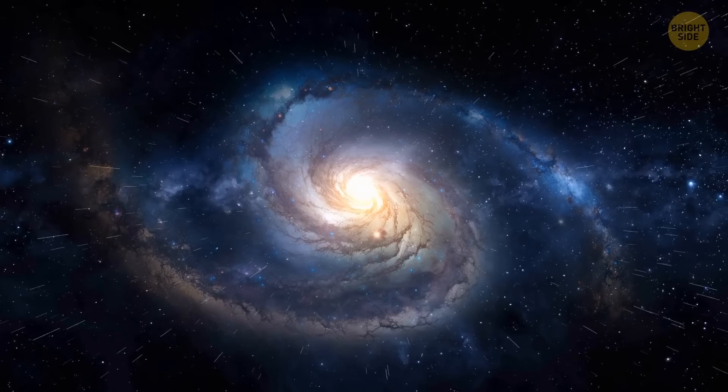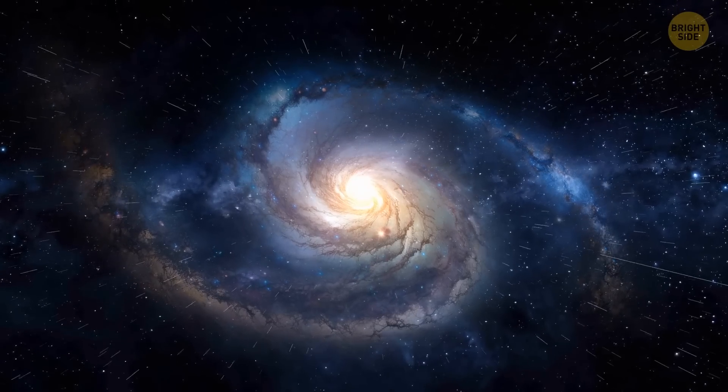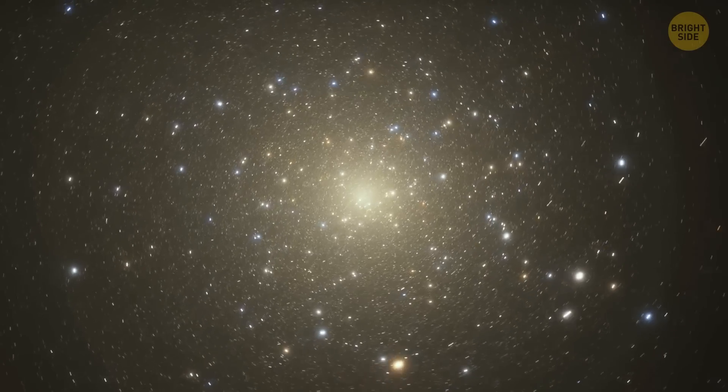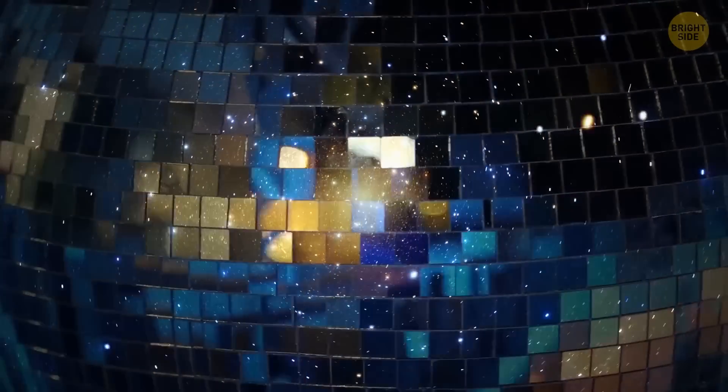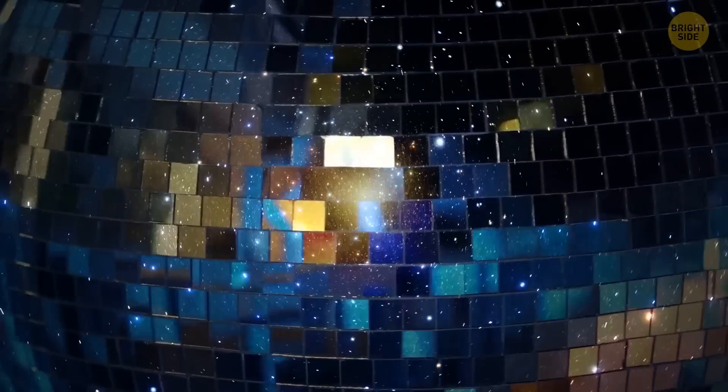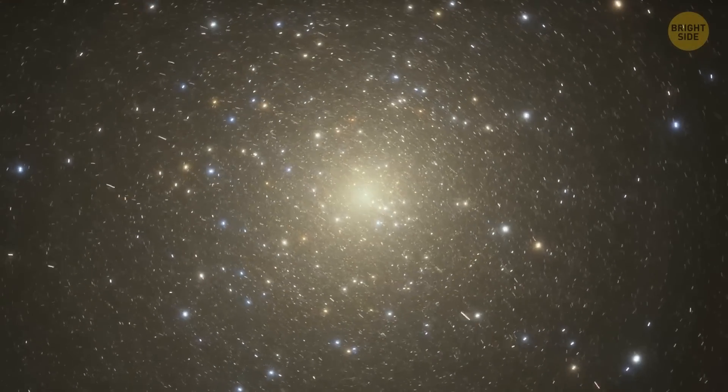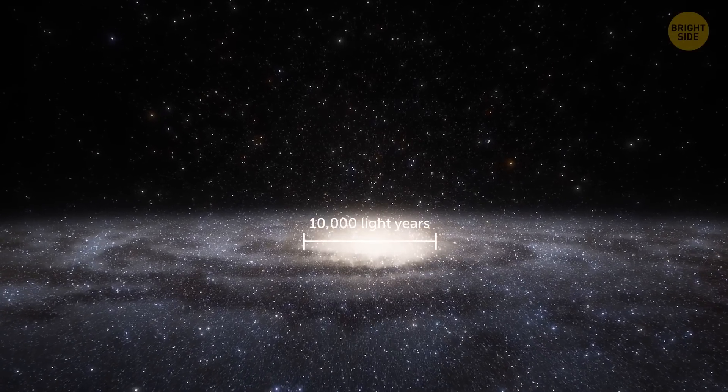The center of the Milky Way is home to a region of space called the Central Bulge, and it's just packed with stars. It's like a disco ball, but instead of shiny mirrors, it's covered in stars. Only this disco ball is really huge, about 10,000 light-years in diameter.